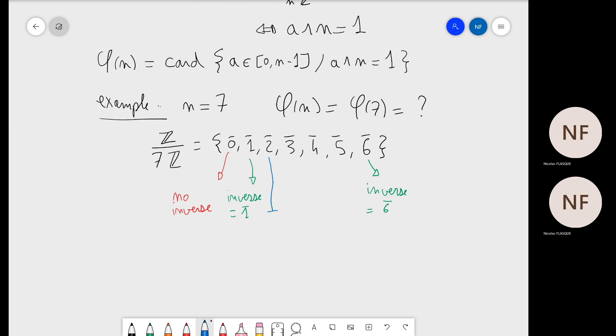Actually, the gcd of two and seven is one, so two has an inverse. The exact value of this inverse is not of interest here because we just have to know if the element has an inverse or not. Same thing for three: the gcd of three and seven is one, so three has an inverse. The gcd of four and seven is also one. The gcd of five and seven is also one. So all those elements have an inverse.